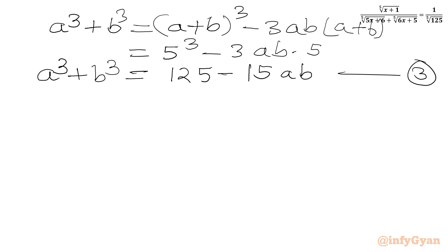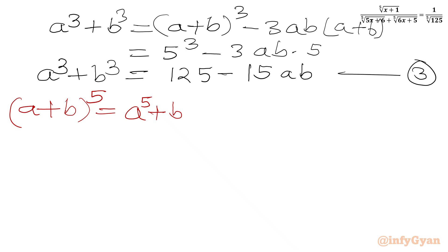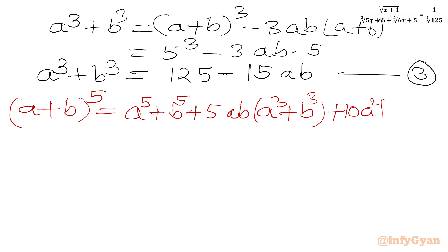Now I will use the binomial expansion for (a+b)⁵. Writing it directly: (a+b)⁵ equals a⁵ plus b⁵ plus 5ab times (a³ plus b³) plus 10a²b² times (a+b). We have equation 1, equation 2, and equation 3. So a⁵ plus b⁵ equals 275 and a plus b equals 5.